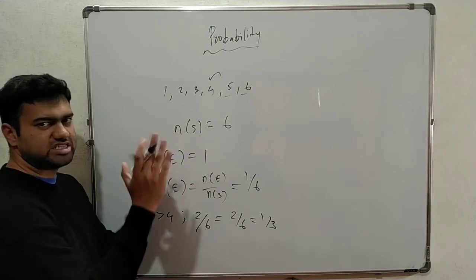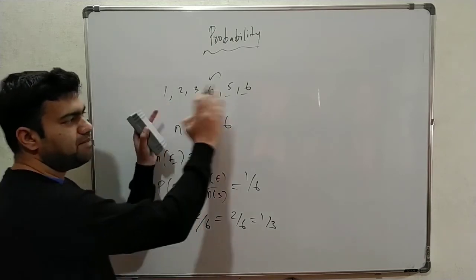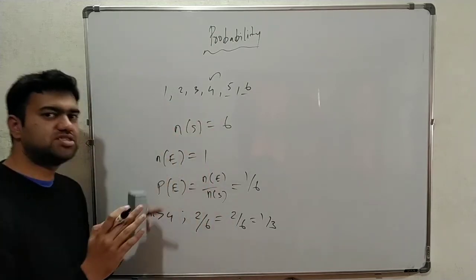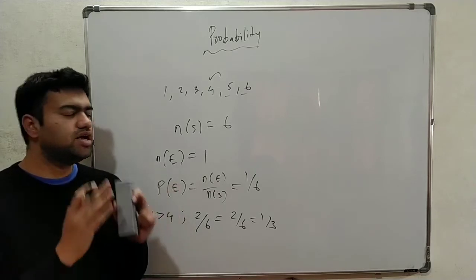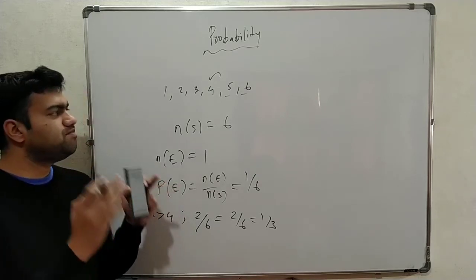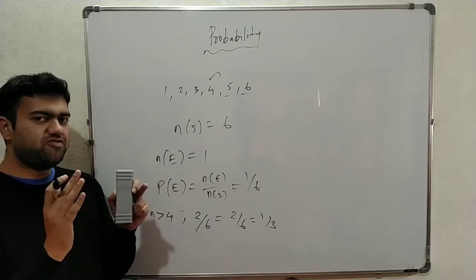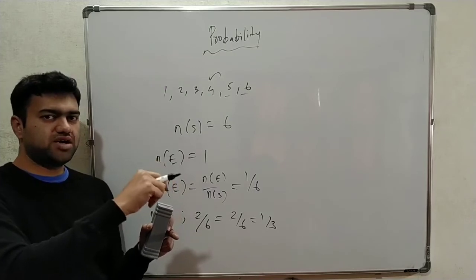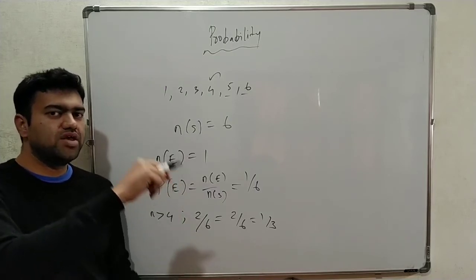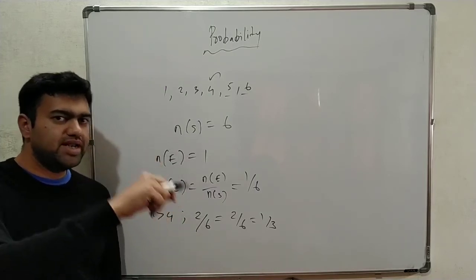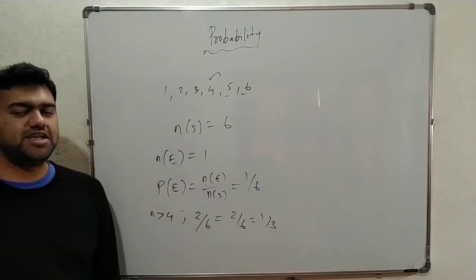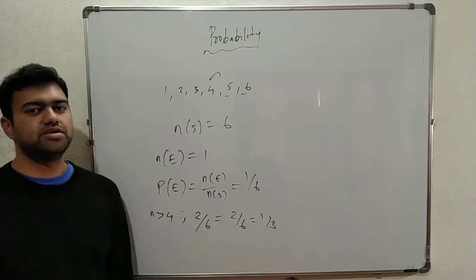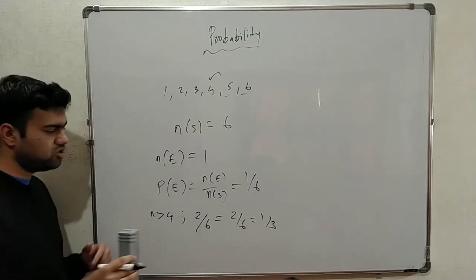The total number is fixed — that is the sample space. How many total elements are there? That is the sample space. How many conditions are fixed? What number satisfies the condition? That is called probability. That is the chance.